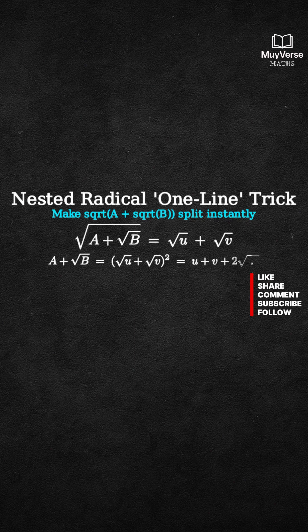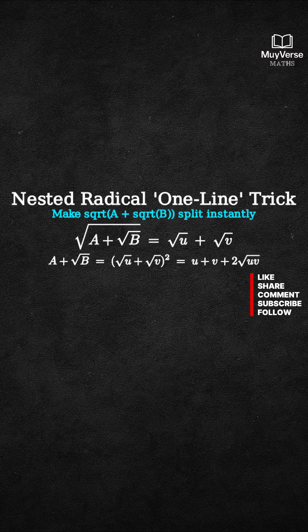On the right-hand side, the square of the sum gives u plus v plus 2 times the square root of uv. Match the plane part and the radical part term by term. From matching, we get the two equations.